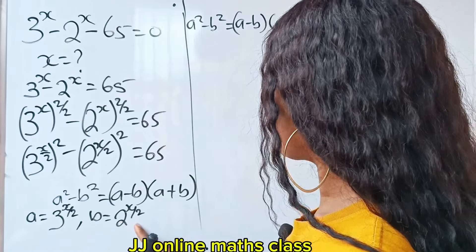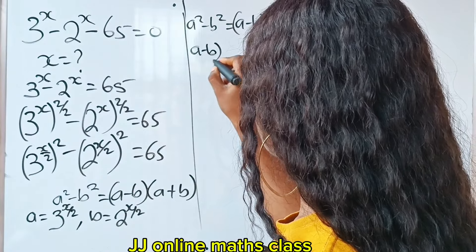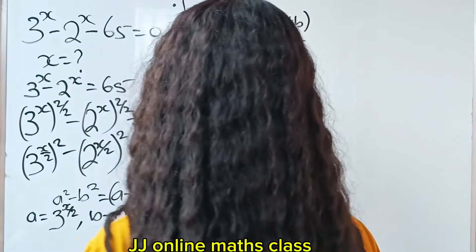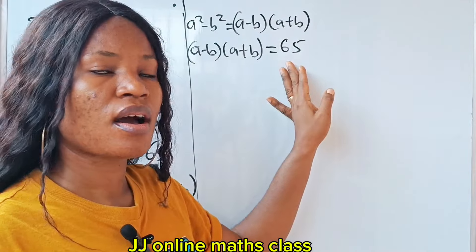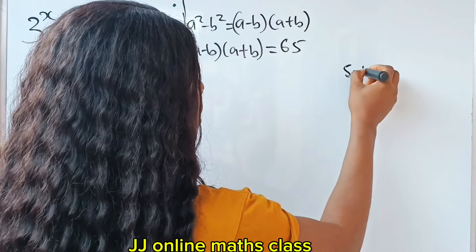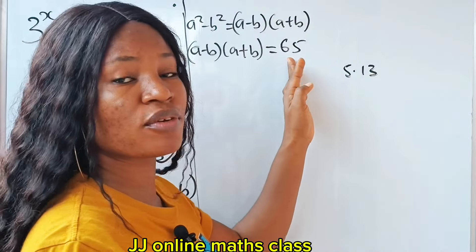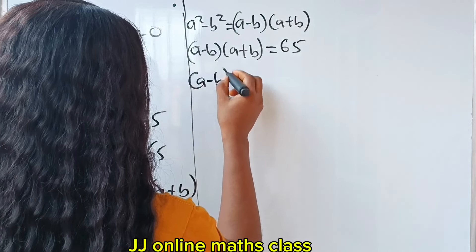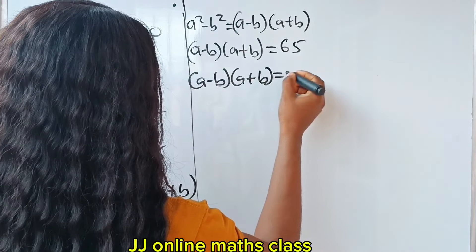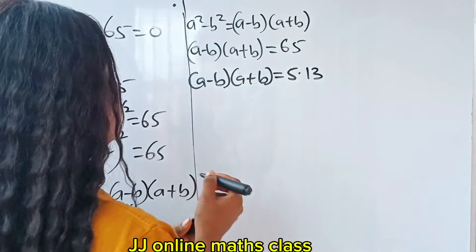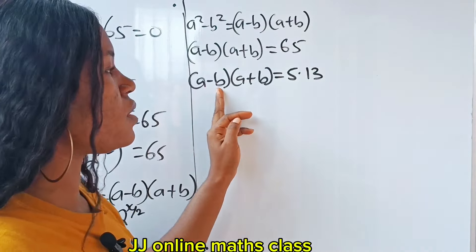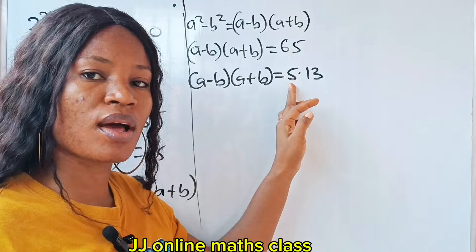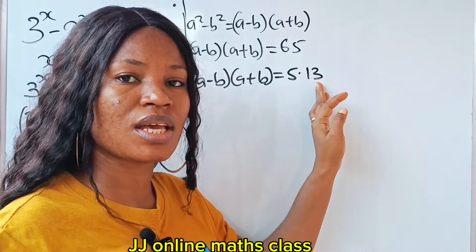So we write that a minus b multiplied by a plus b is equal to 65. Now 65 can be written as 5 times 13, because 5 times 13 gives you 65. Now, a minus b must be less than a plus b, so a minus b should be equated to the smaller number and a plus b to the larger number.